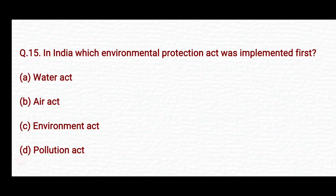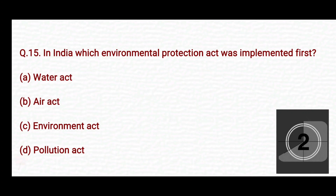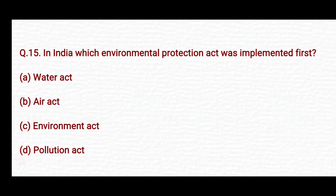In India, which environmental protection act was implemented first? Option A: Water Act. Option B: Air Act. Option C: Environment Act. Option D: Pollution Act. The right answer is Option A — Water Act.